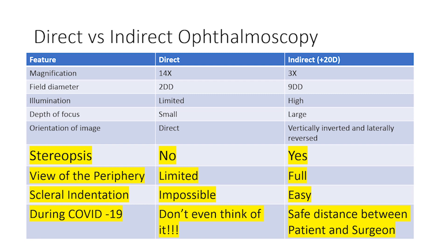Scleral depression, which is an essential part of peripheral retinal examination and management of peripheral retinal lesions, can be done only with the indirect method. Because in the indirect method there is a safe distance of almost 1 meter between the patient and the examiner, during pandemics like COVID-19, it is far safer than doing a direct ophthalmoscopy, which should be avoided at present.